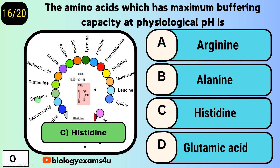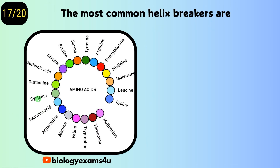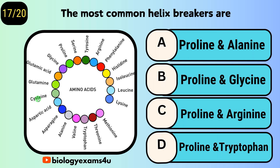Question number seventeen: the most common helix breakers are — option A, proline and alanine; option B, proline and glycine; option C, proline and arginine; option D, proline and tryptophan. The answer is proline and glycine.